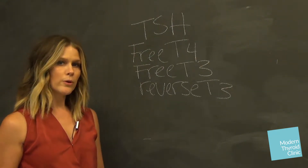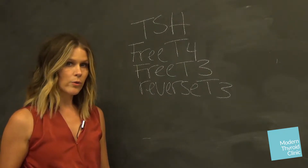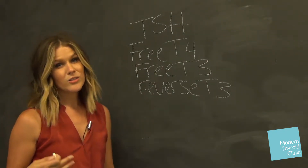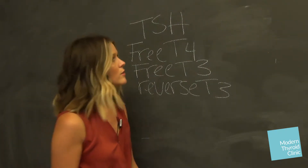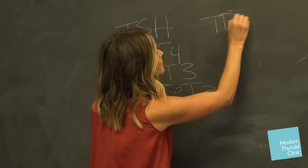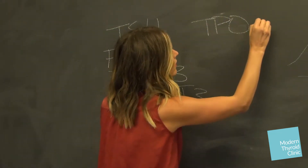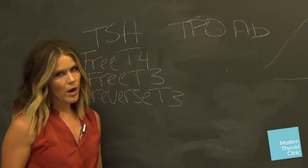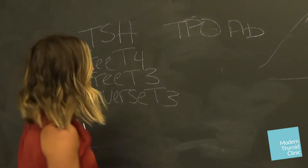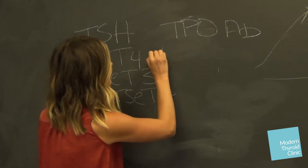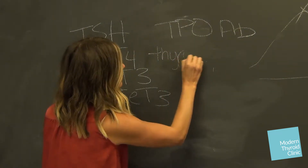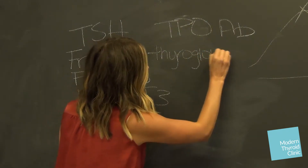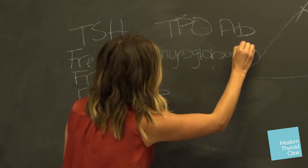To check for Hashimoto's, or the autoimmune component of hypothyroidism, you really need to check antibodies. Those are TPO antibodies, or thyroid peroxidase antibodies, and thyroglobulin antibodies.